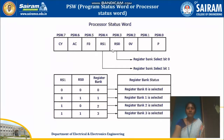Among the four banks of registers — register bank 0, 1, 2, and 3 — whatever data we give to RS0 and RS1 will determine which particular register bank is selected. For example, if RS1 is 0 and RS0 is 1 — that is, if you write 'SETB PSW.3', it means RS0 equals 1, and 'CLR PSW.4' means RS1 is 0 — then register bank 1 will be selected. So whatever registers R0, R1, R2, R3 you are using will be taken from register bank 1.